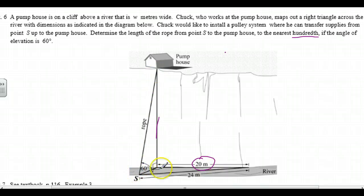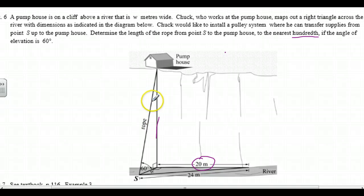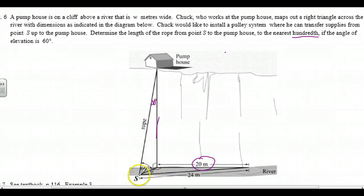Looking at this triangle, we have unknown W, 60 degrees, and other unknowns — too many unknowns. We do know this is 30 degrees here, but that doesn't help us. What we need is a length, and here it is: W. So we're going to get W from this flat triangle using the Pythagorean theorem.